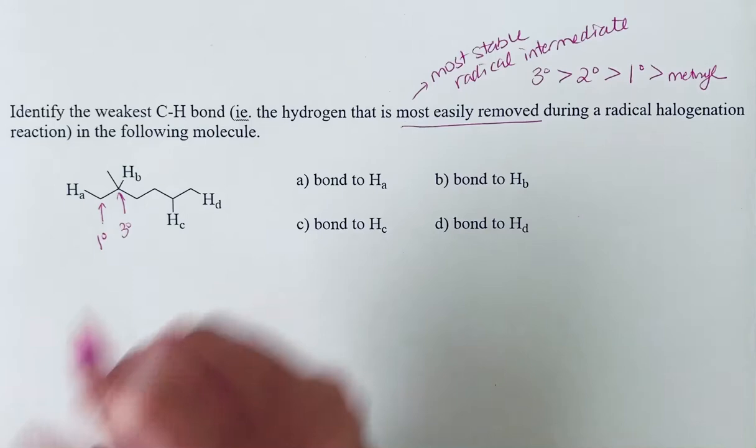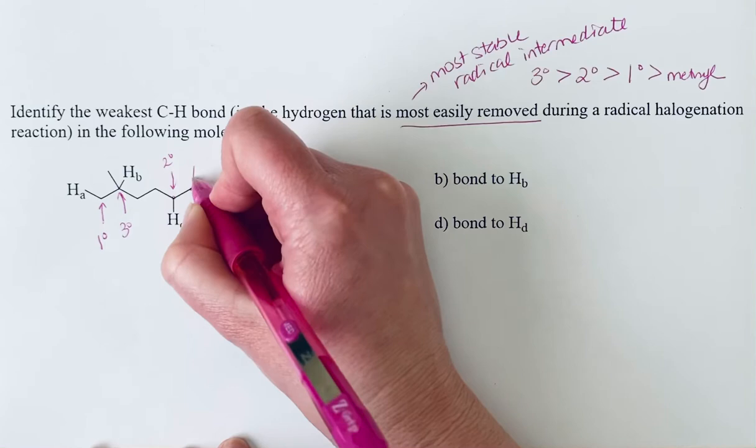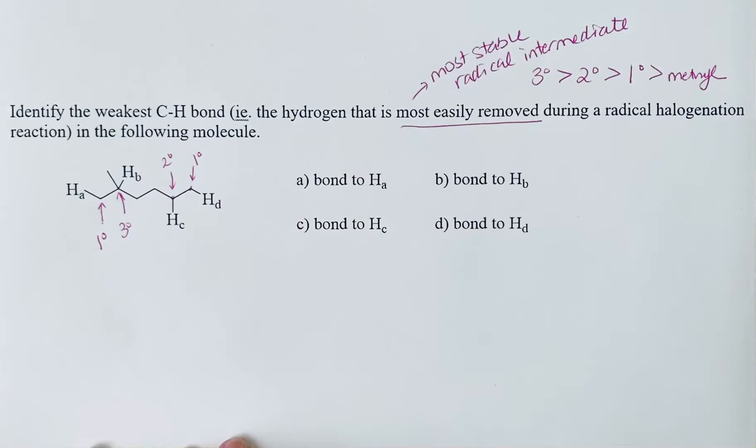HC is attached to a secondary carbon, and HD is attached again to another primary carbon. So we're just counting the number of bonds to other carbons.